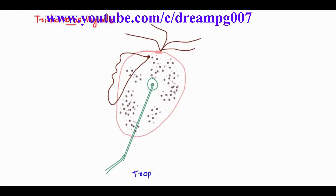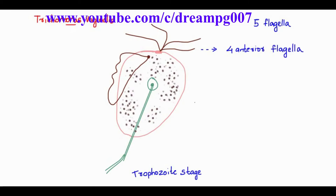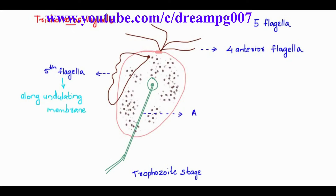This is the trophozoietic stage of trichomonas vaginalis. It has 5 flagella — 4 anterior flagella and the 5th flagella along the undulating plasma membrane. This one is the axostyle which runs along the center of the trichomonas vaginalis. This trophozoietic stage is the infective stage of trichomonas vaginalis.